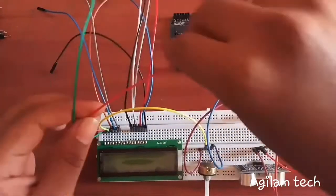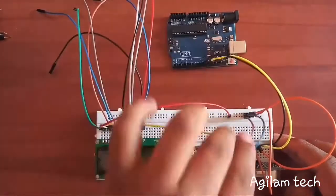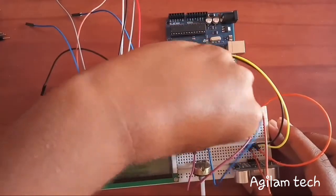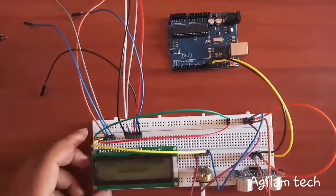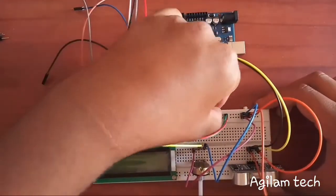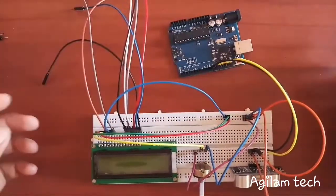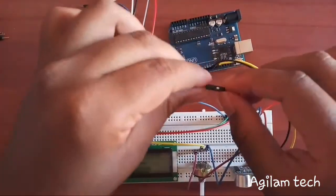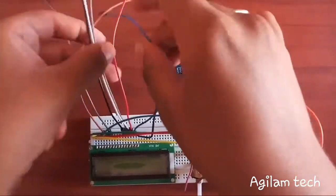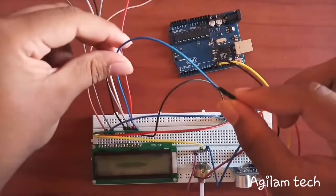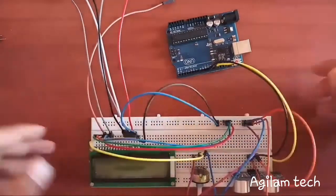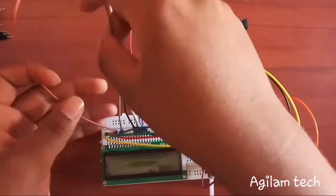Now I am going to connect LCD display, that is pin number two to 5 volt and pin number one to ground, and I am connecting pin number five also to ground. Yeah, well set. And pin number five to 5 volt, yeah plus 5 volt, okay all set. Now I should connect the LEDs to Arduino.